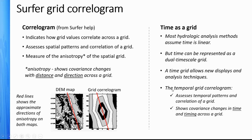This temporal grid allows new ways to show what's going on and different ways to analyze the data. We're going to create a temporal grid correlogram. Whereas it was developed for spatial patterns and correlation, we can easily show temporal patterns and correlation. Before we looked at distance and direction; now we can see changes in time and timing across the grid — giving us extra ways of analyzing data we didn't really have before.